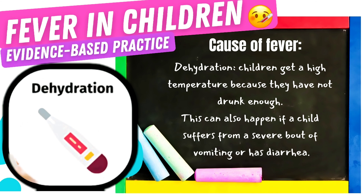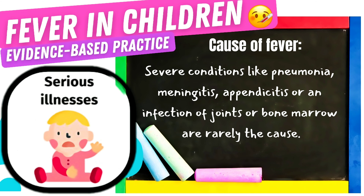A high temperature can also be caused by dehydration — children get a high temperature because they have not drunk enough. This can also happen if a child suffers from a severe bout of vomiting or diarrhea. High temperature can also be caused by serious illnesses such as pneumonia, meningitis, appendicitis, or an infection of joints or bone marrow, although these are rarely the cause.